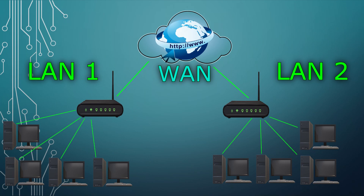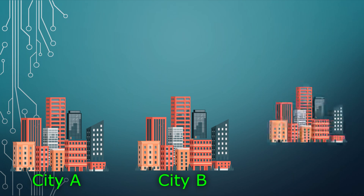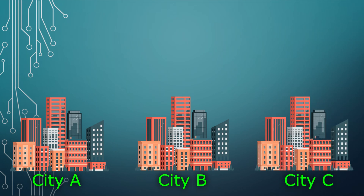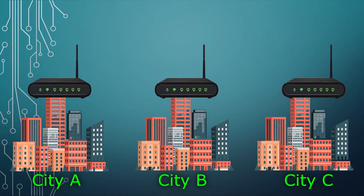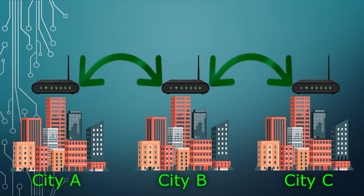A wide area network can also be run by a private company. For example, let's say a company's headquarters are in city A but it also has branches in city B and C. All three locations have their own local area networks, but they also want a networking infrastructure that connects all of these locations together. This can be done with the help of an internet service provider, aka ISP, who can set up and interlink all of the company's local area networks under the umbrella of a single wide area network.